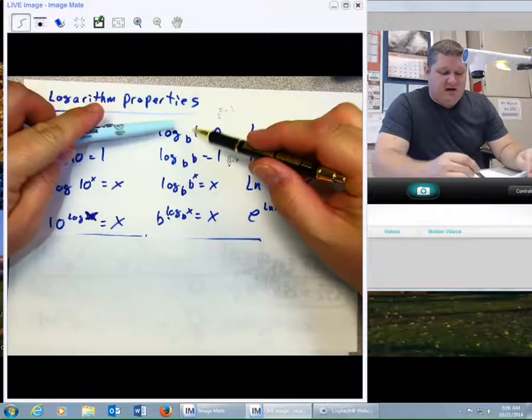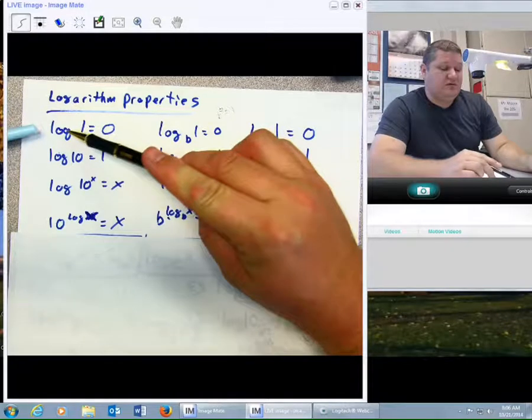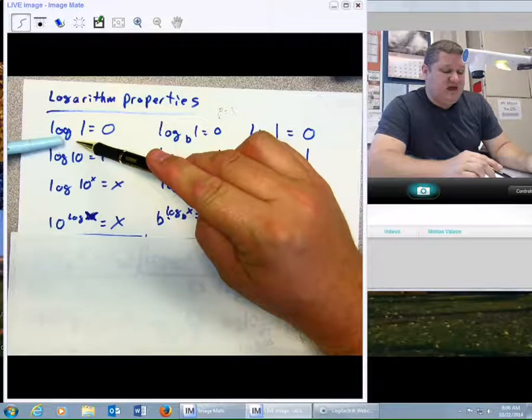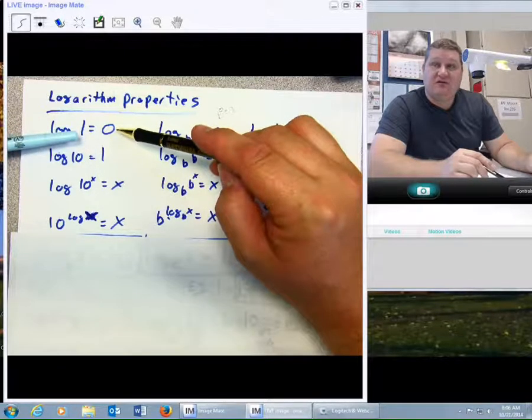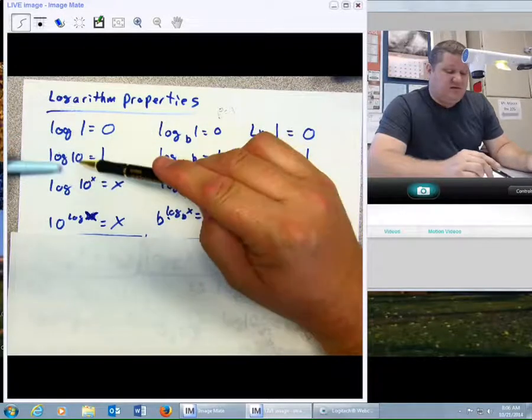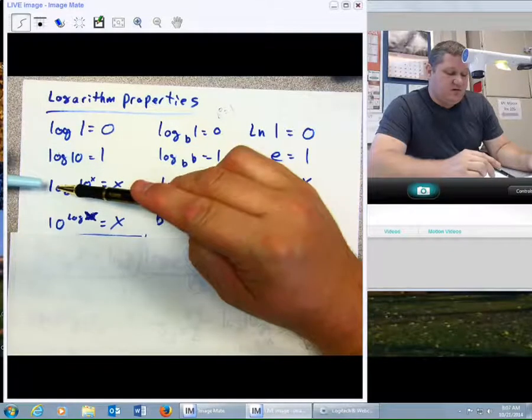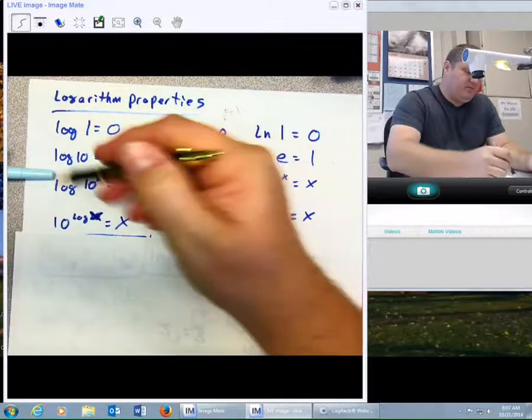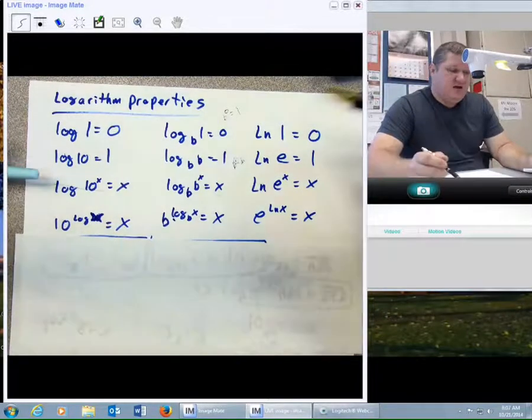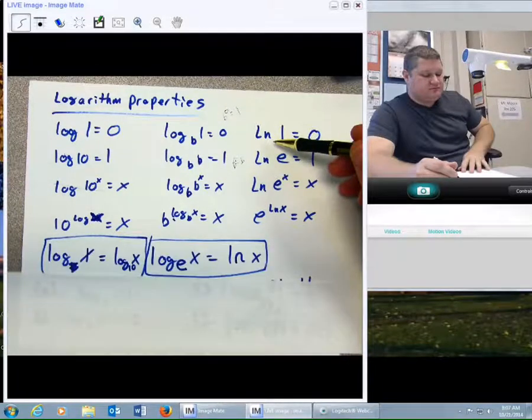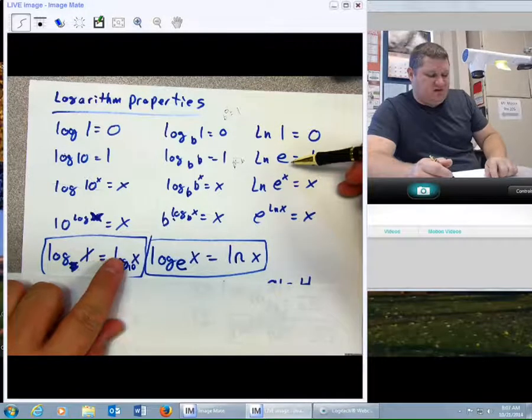That applies whether the base is b or whether the base is 10, because remember, if I see log with no additional base, log base 10 of 1, how many 10s does it take to make 1? It doesn't take any, so it's 0. If you have log base 10 of 10, how many 10s does it take to make 10? 1. Log base 10 of 10 to the x, they cancel, leaving just x. 10 raised to the log base 10 of x is x. Remember that log base nothing of x is the same thing as log base 10 of x. That's what we assume.